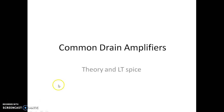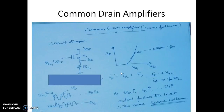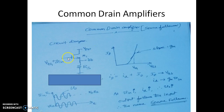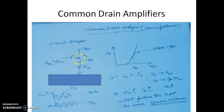In this video we shall see the working of the common drain amplifier along with theory and LTspice noise simulation. This is a circuit diagram of the common drain amplifier, also called a source follower. The gate is applied with a DC voltage VGS plus the input voltage Vin. The drain is connected to VDD, the source is connected to RSS, and the output is taken at the source.